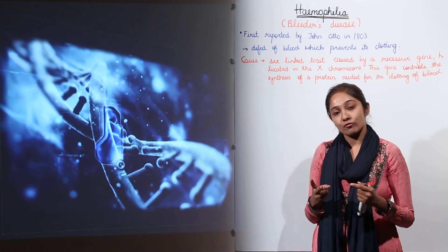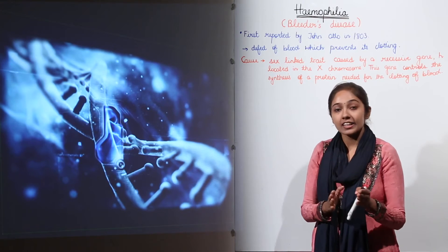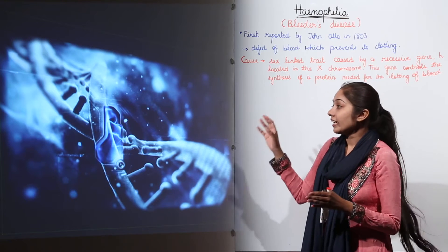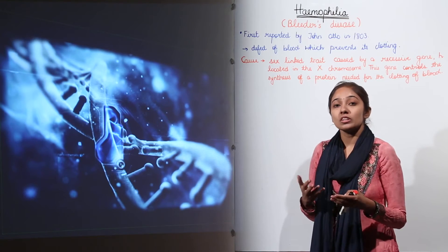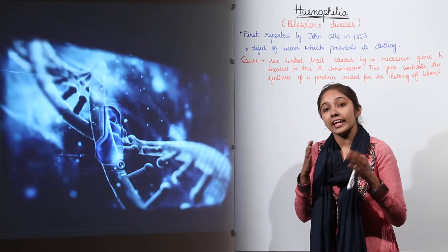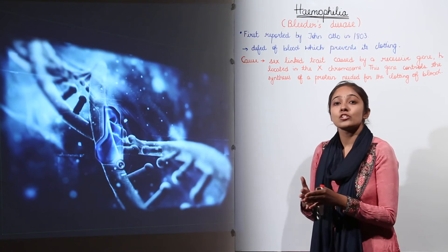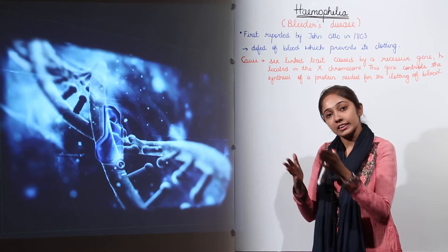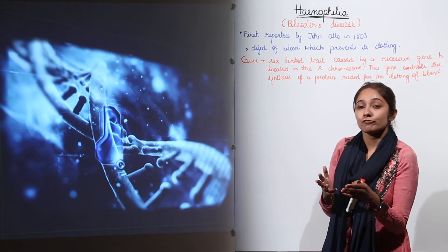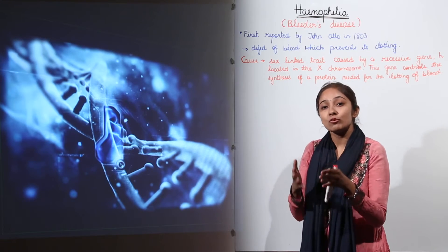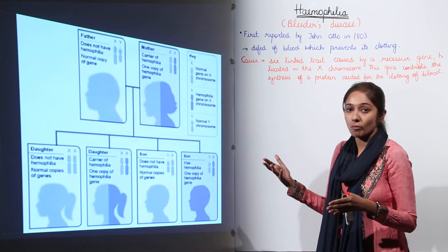We have two types of Haemophilia, Haemophilia A and Haemophilia B. Haemophilia A actually is due to the lack of clotting factor VIII and Haemophilia B is due to the lack of clotting factor IX. Mostly 90% of the patients, they suffer from Haemophilia A. So Haemophilia A is more common.